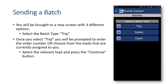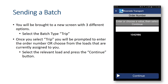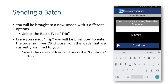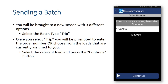You will be brought to a new screen with three different options. Select the batch type TRIP. Once you've selected TRIP, you will be prompted to enter the order number or choose from the loads that are currently assigned to you. Select the relevant load and press the Continue button.